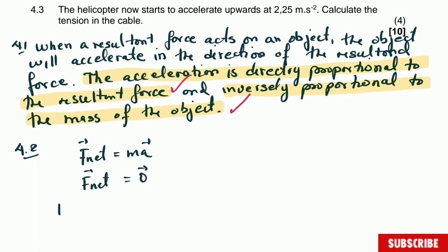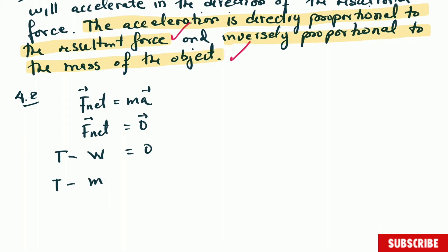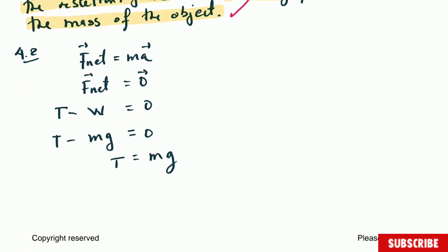We say up is positive, so the forces are tension minus weight equals zero. If we substitute, tension minus mass multiplied by acceleration due to gravity equals zero. Tension will be equal to mass multiplied by acceleration due to gravity. When you substitute, the tension is 1205.4 and we're looking for mass. The acceleration due to gravity is 9.8. When you rearrange for mass, m equals 1205.4 divided by 9.8, and we get that the mass equals 123 kilograms.